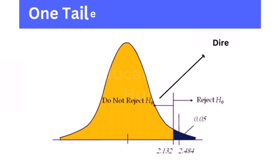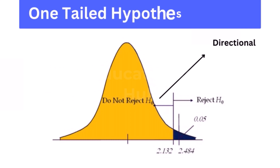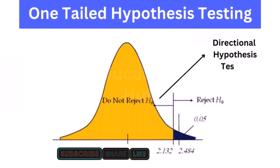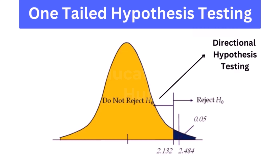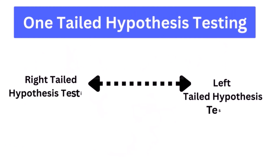One-tailed hypothesis testing: One-tailed hypothesis testing is done when the rejection region is only in one direction. It can also be known as directional hypothesis testing because the effects can be tested in one direction only. This type of testing is further classified into the right-tailed test and left-tailed test.